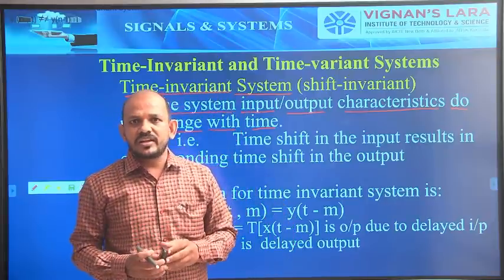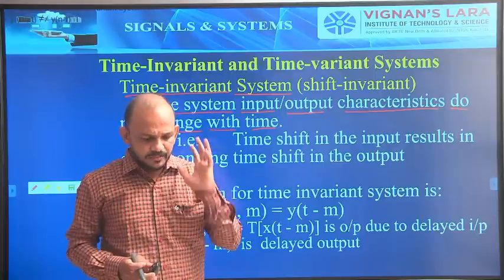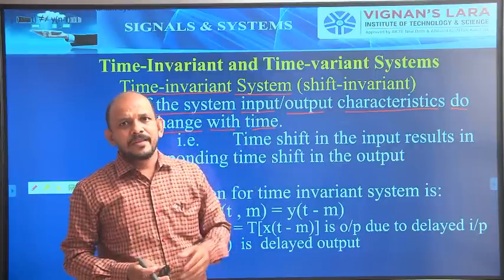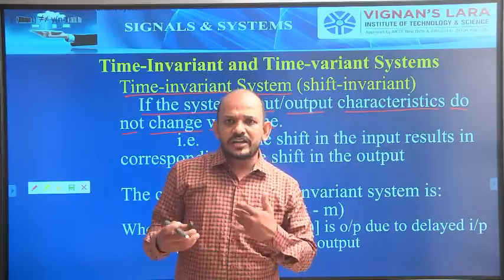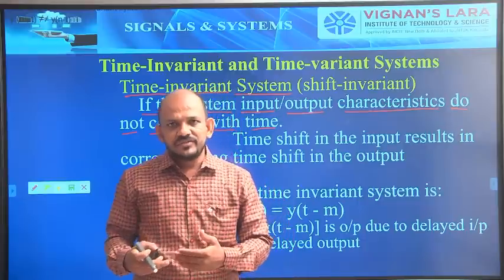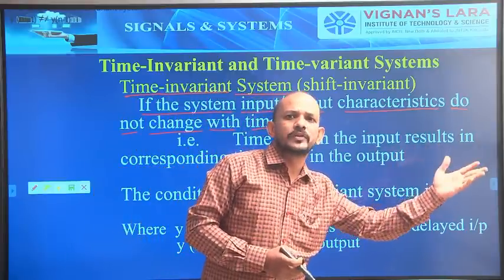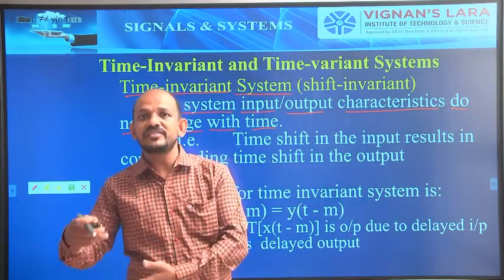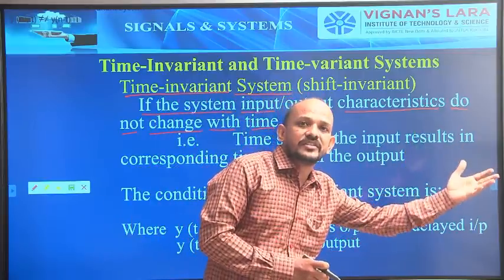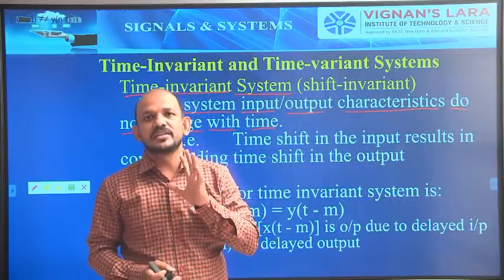If there is any delay or advance in the input signal, the same delay or advance has to occur at the output. If there is a delay in the input signal, then the same delay has to be at the output. If there is an advance in the input, the same advance should occur at the output. Those types of systems are called time invariant systems.